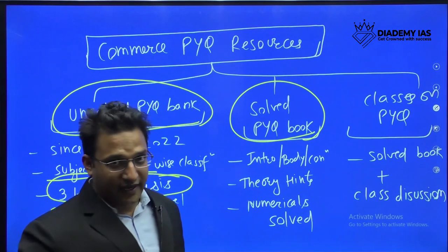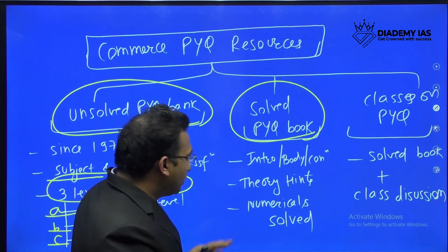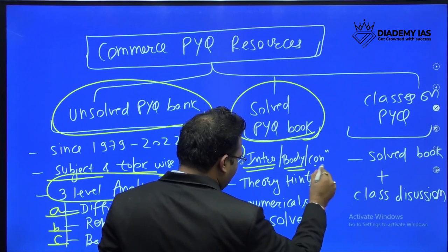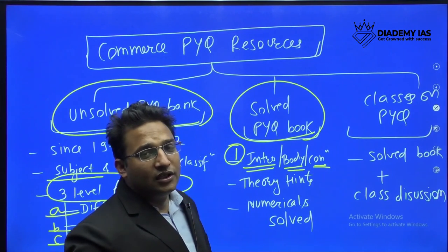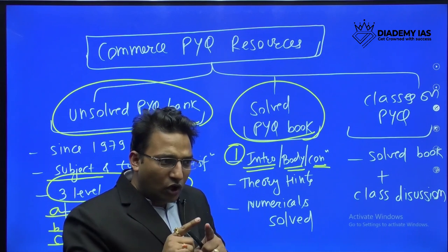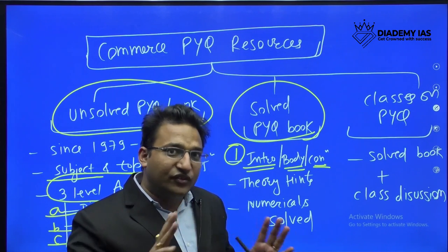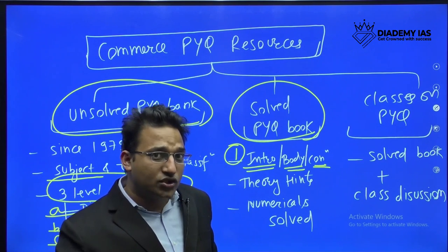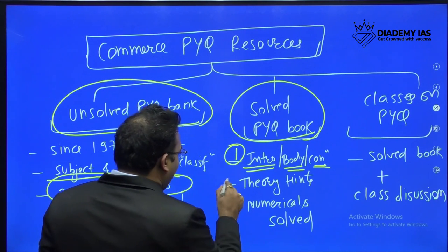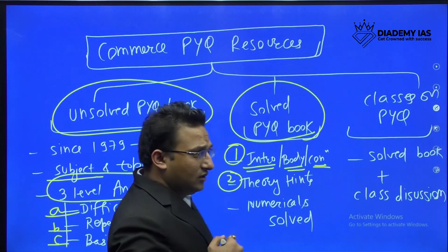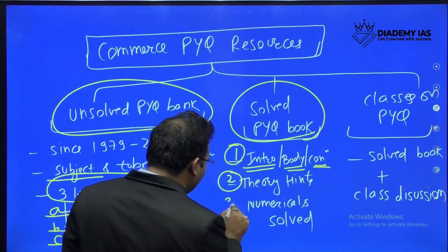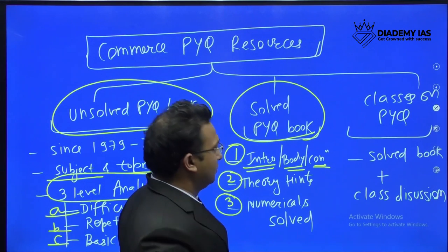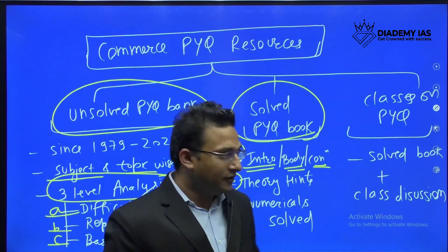Apart from this, we also have a solved previous question book. This book has three important things: number one, important hints about introduction, body, and conclusion — what the word limit should be, what the idea for the introduction should be. We won't give very detailed solutions, but you'll get sufficient guidance. Keywords, body structure, subparts, hints for theory especially in paper one, and numerical solutions will be given in complete detail.